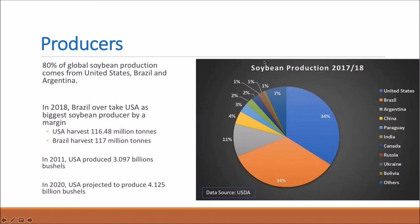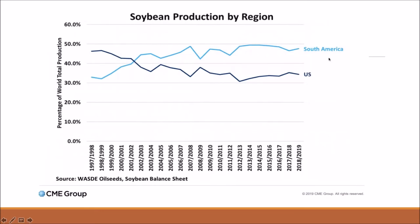Looking at the pie chart, the US produces about 34% and Brazil about 34% of global soybean supply. But if you combine South America — Brazil and Argentina — they've actually overtaken the US as the biggest producer. In 2021, South America officially overtook the US as the biggest producer.